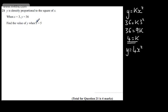So we want to find the value of y when x is equal to 5. So y is going to be 4 lots of 5 squared. That's going to give me that y is equal to 4 lots of 25, and that gives me that y is equal to 100.